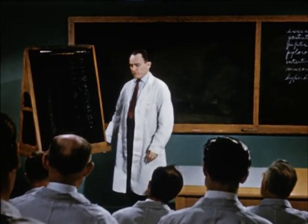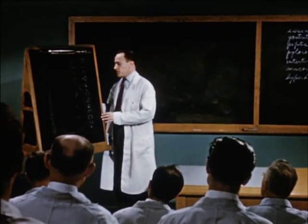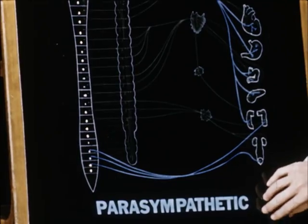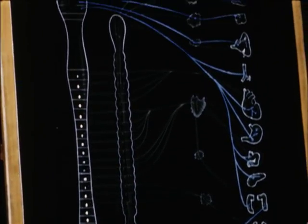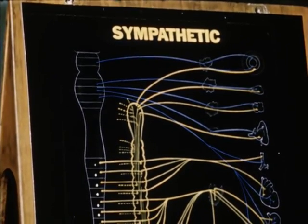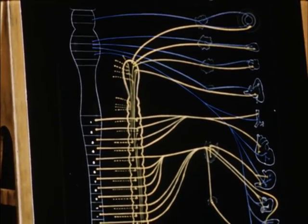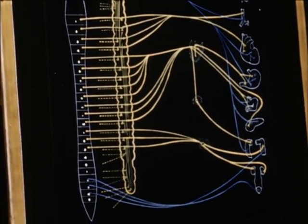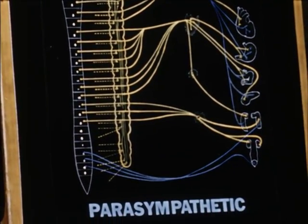Two opposing subdivisions make possible this accommodation to changing demands. They are known as the parasympathetic and the sympathetic. Each consists essentially of a separate neural network, thus providing a double innervation to smooth muscle and many secretory tissues.